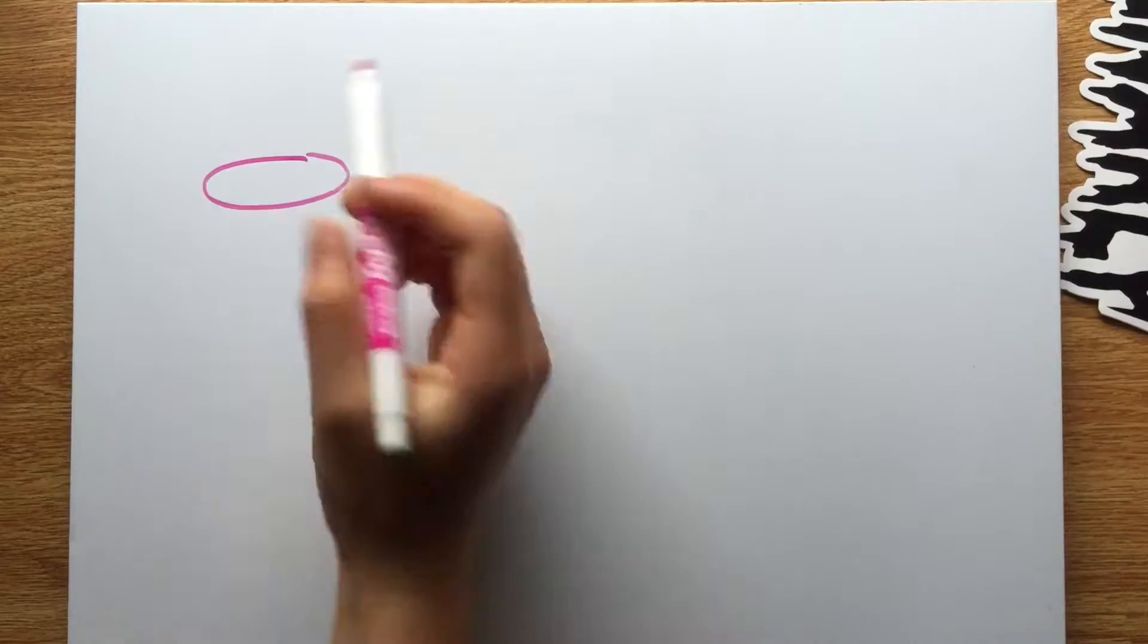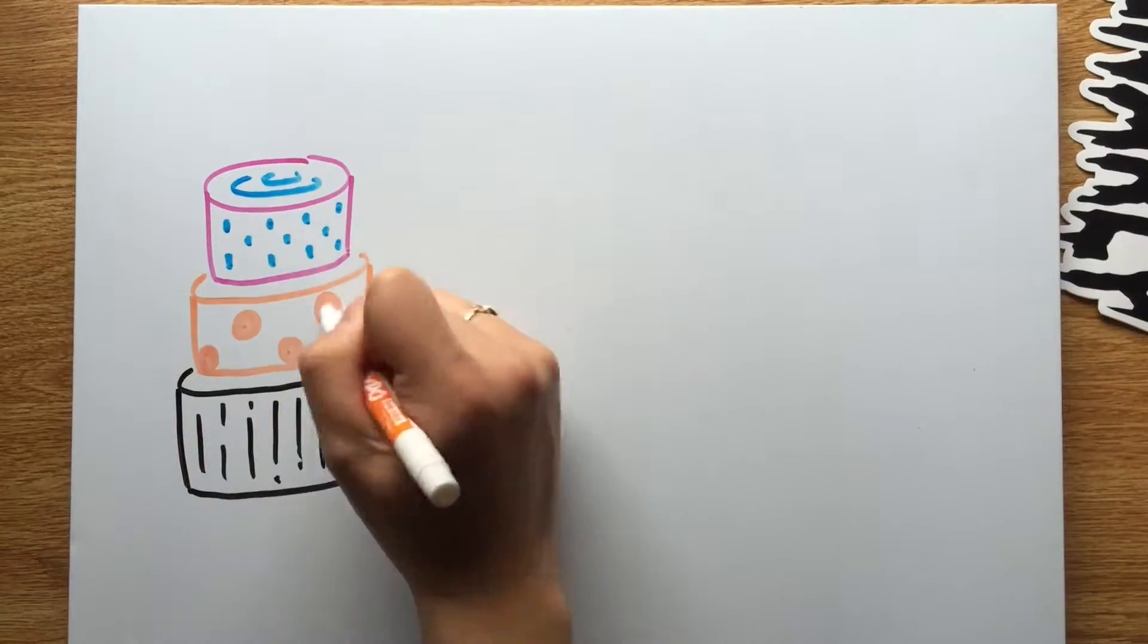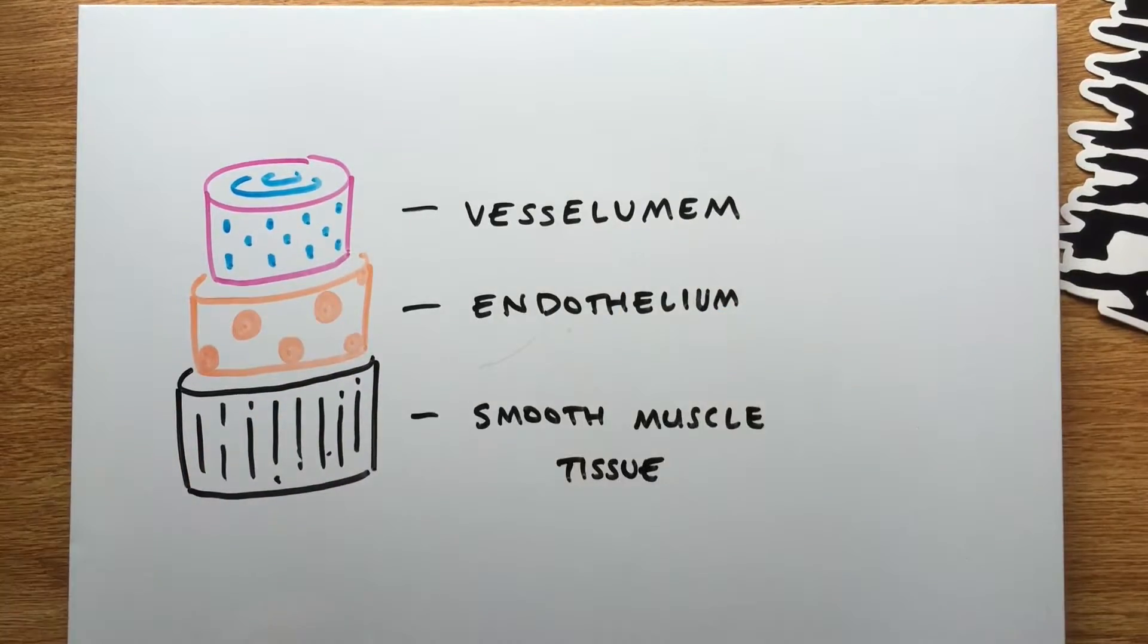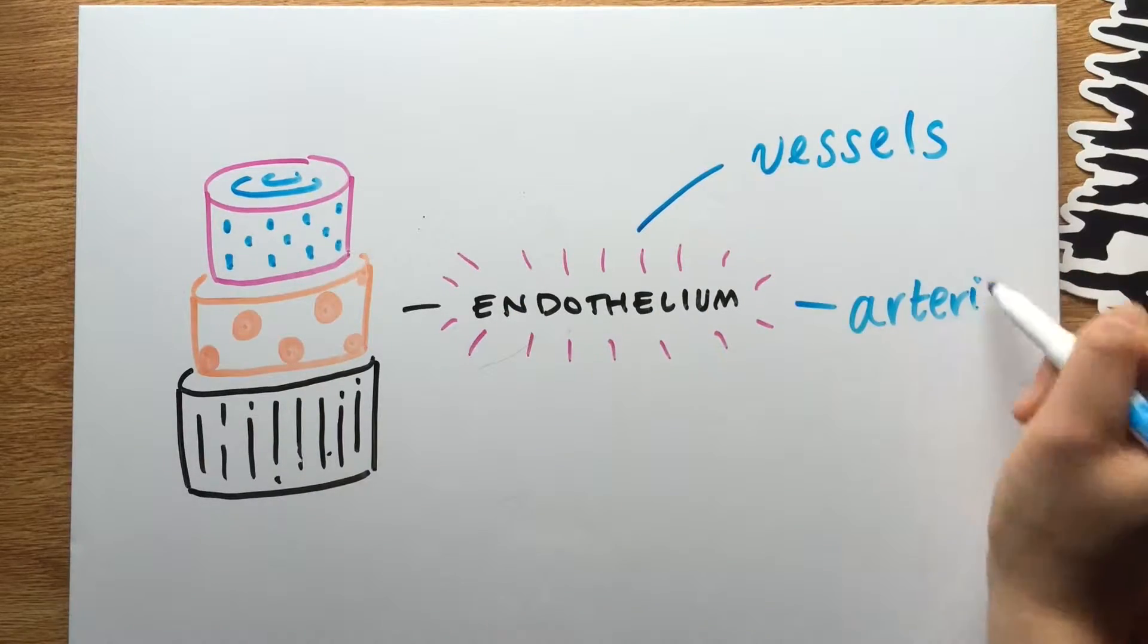Arguably the most important part of your cardiovascular system is the vascular endothelium, the cells outside of your vessel lumen that line your vessels, arteries, and pretty much everything else cardio.